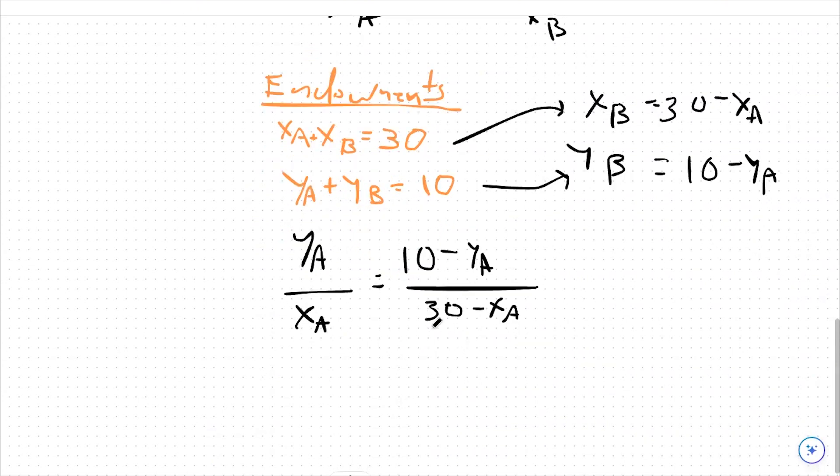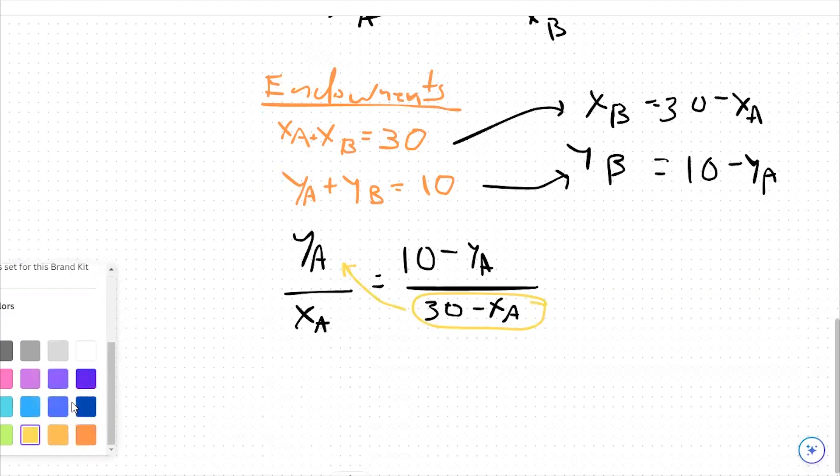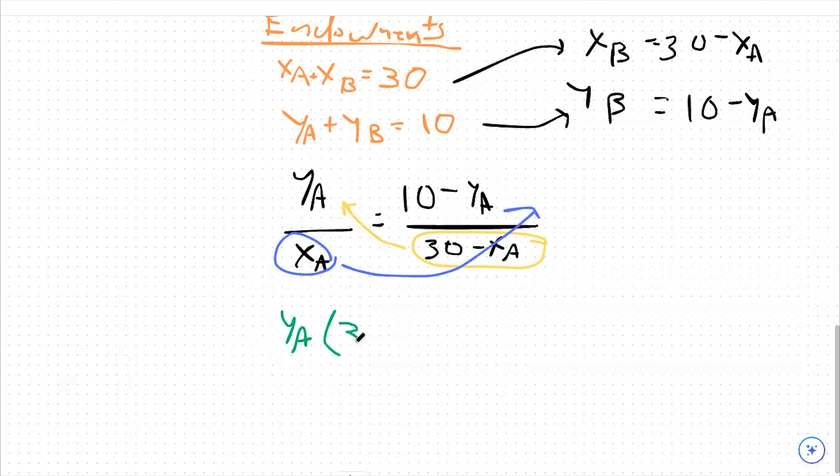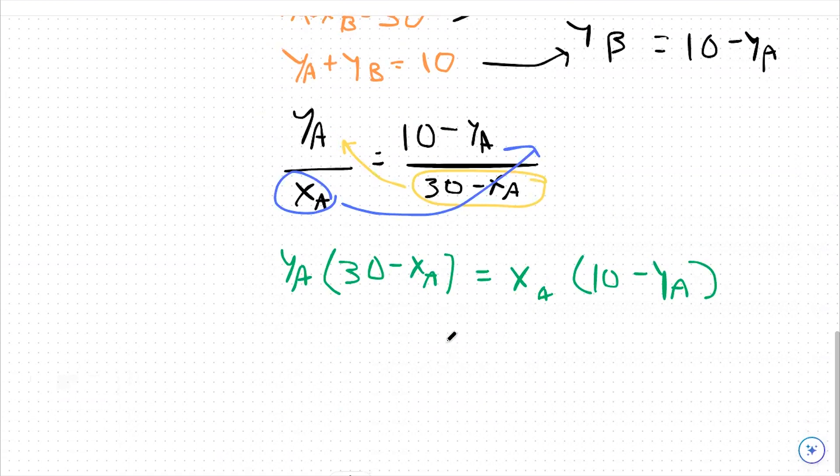So now we only have two variables. That's a lot easier to work with. From there, I'm going to cross multiply. I'm going to take this and multiply over here, and take this and multiply over here. What we're left with after that process is YA times 30 minus XA equals XA times 10 minus YA. This looks kind of messy, but I assure you that once we distribute everything out and combine some like terms, it'll look a lot cleaner.